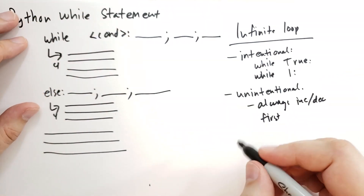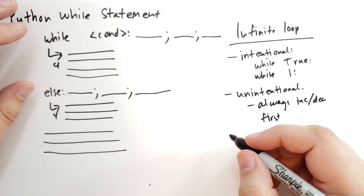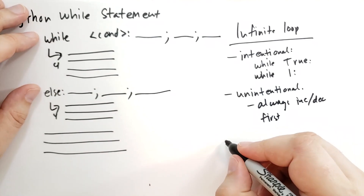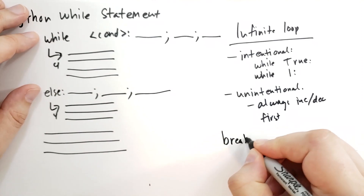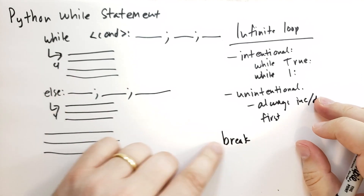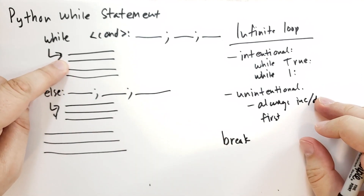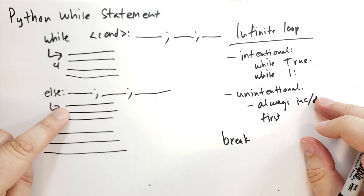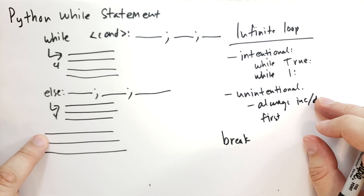Inside of the while block, you can have two statements that you can only run inside of a while or for loop. The first one is break. Break, when executed, will immediately exit the loop, skip the else statement, and continue with the statements following the while statement.